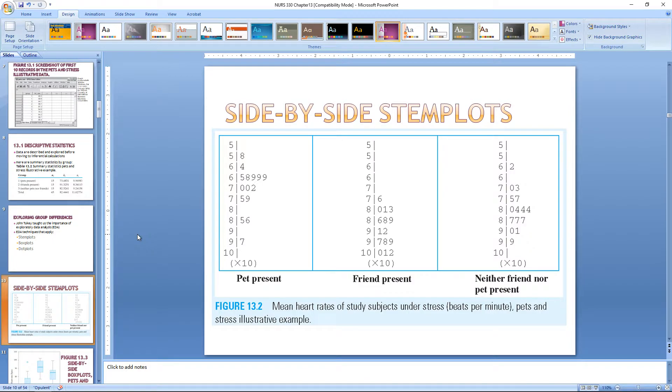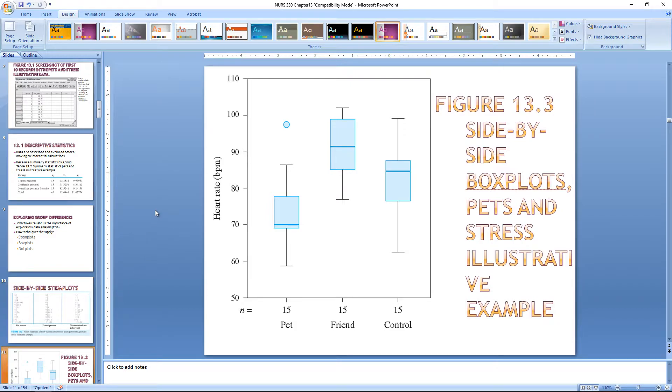Here's side-by-side stem plots for each group with the pet present, the friend present, and neither friend nor pet present. As you can see, our pet present shows somewhat of a normal curve, this one would have a skew, and the third one is pretty normal too. We can also look at the box plot with our quartile ranges here and where they stack up. We can look at this data, but is there any difference between these groups? That's what we're trying to measure. Can you tell if there's any difference by just looking at it?